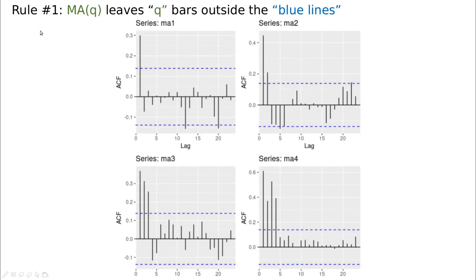Let me show you some examples. Let's start with the moving average. This is going to be rule number one. If you're simulating an MA1 process, typically you have only one bar outside these blue lines.